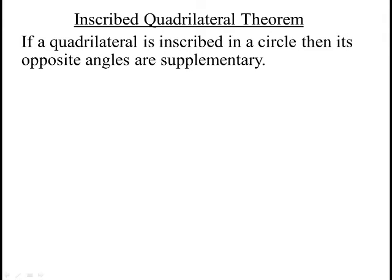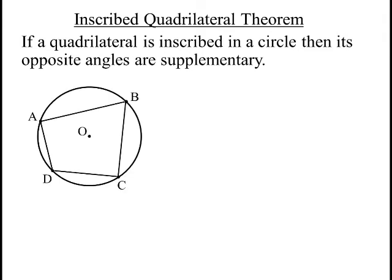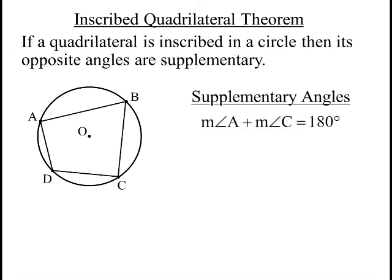So the last theorem for today is this one involving a quadrilateral. You remember that the angles in a quadrilateral, in a convex quadrilateral like this, always add up to 360 degrees because it's made up of two triangles in there basically. What you may not know is that if it's inscribed in a circle, then the opposite angles are going to be supplementary to each other. They're always going to add up to 180. So A and C will be adding up to 180, and B and D will also be adding up to 180.